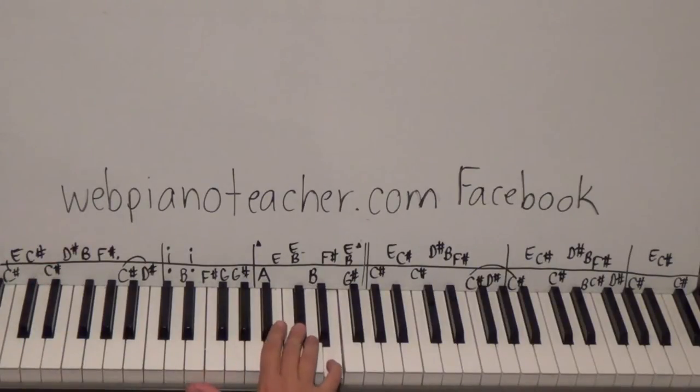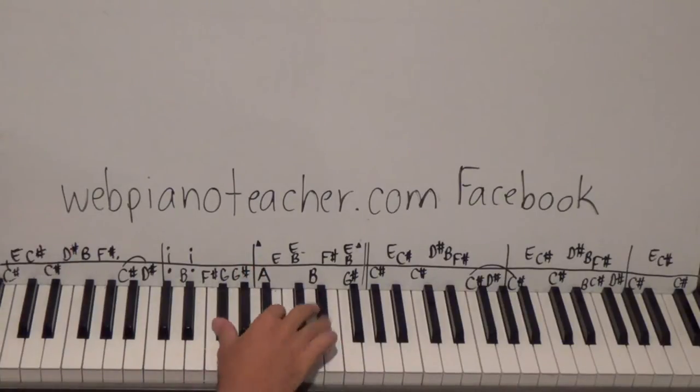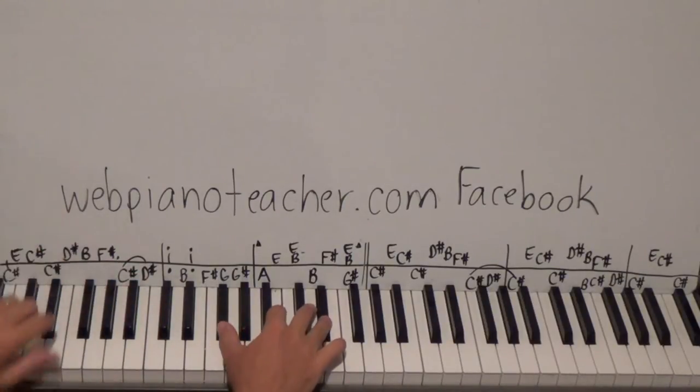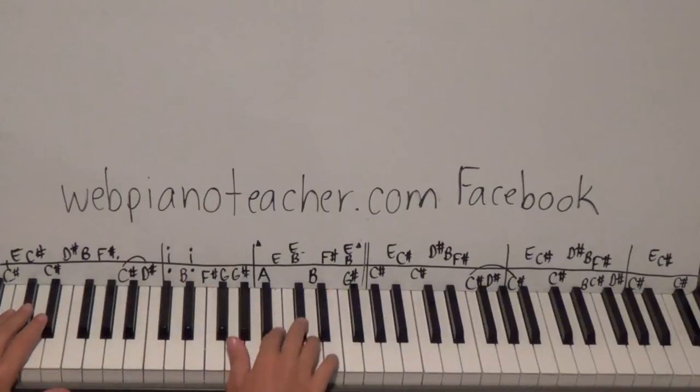It's going to be E and C sharp with five and three, then I'm going to do D sharp, B, F sharp, four-two-one. So here's how it goes: left hand first, right, right, left, right, right, left, left. Let's do it again.